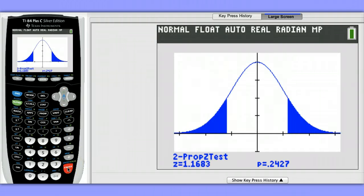And what this does is it draws the normal distribution and it gives us our test statistic value once again and it shows us the area shaded here under the two tails. The area of these two tails combined is 0.2427.